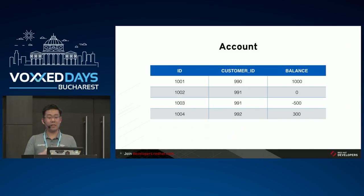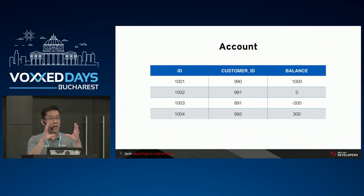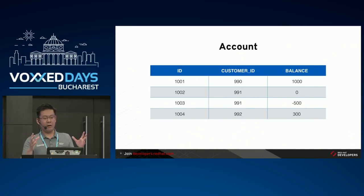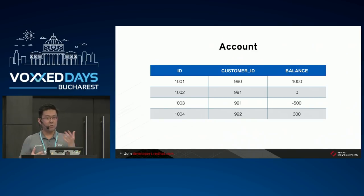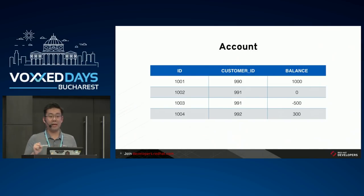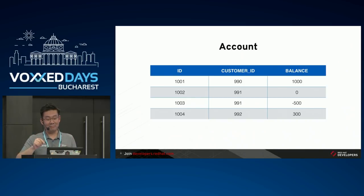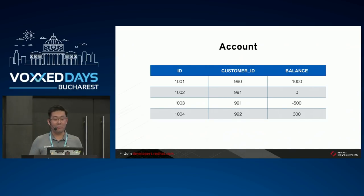The traditional way to model and store data in a system is like this: we have an account, I model an account with an ID, a customer ID, and maybe a balance. Most banking systems don't store your money in a single row and column saying you have a thousand lei in your balance - or zero, or minus 500. This is the traditional way of doing CRUD applications. You have this account model in your code and memory, and you store this data in an account table with rows and columns.